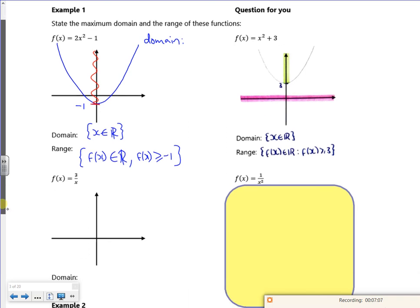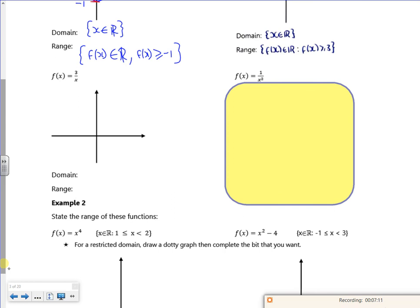I've got 3 over x. 3/x looks like that, it's got asymptotes where y is zero and x is zero. The domain: x belongs to the real numbers but x can't equal zero. The range: f(x) belongs to the real numbers but it can't be equal to zero. I can't have x is zero because there's nothing crossing on the y-axis, and I can't have y is zero because there's nothing crossing on the x-axis.